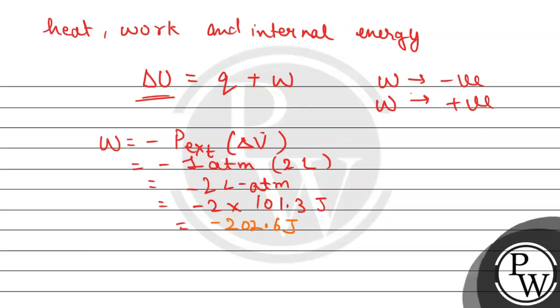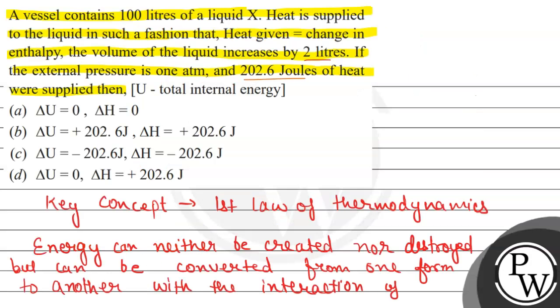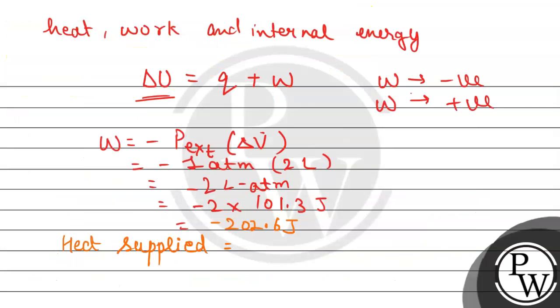It is given that heat is supplied, which means work is done on the system. So the work done will equal the heat supplied, and that will be 202.6 joules. This is the heat supplied, that is Q, and this heat supplied will equal the change in enthalpy.